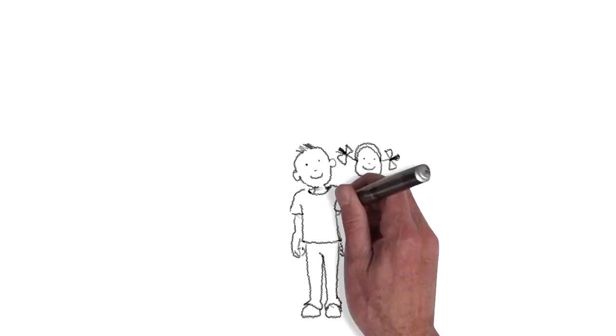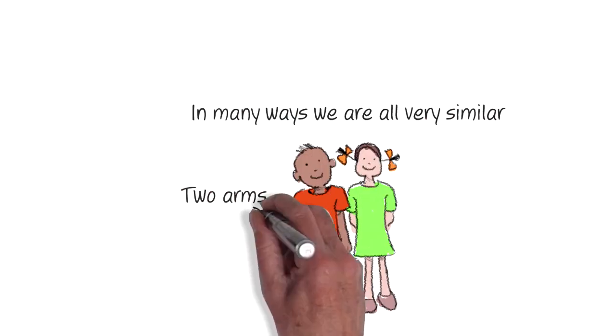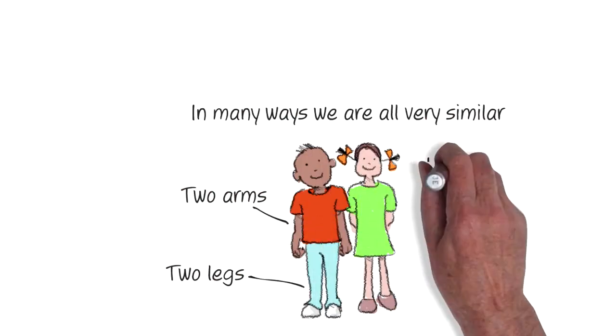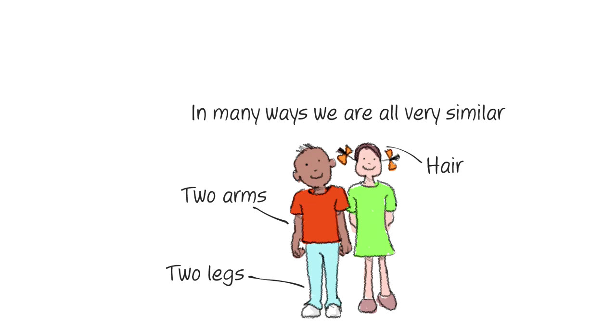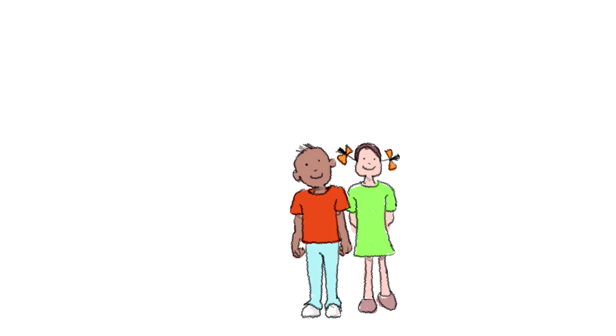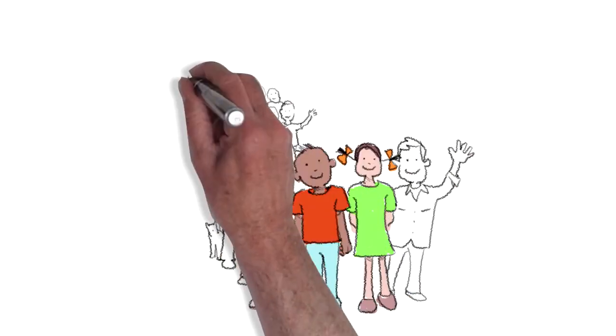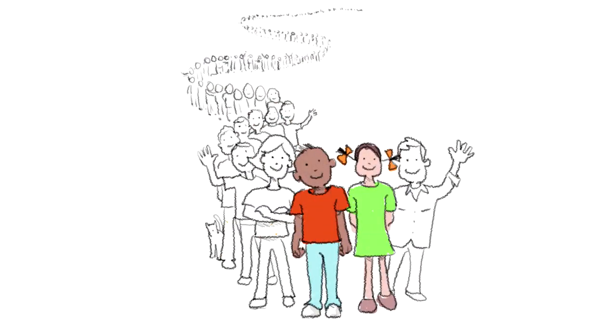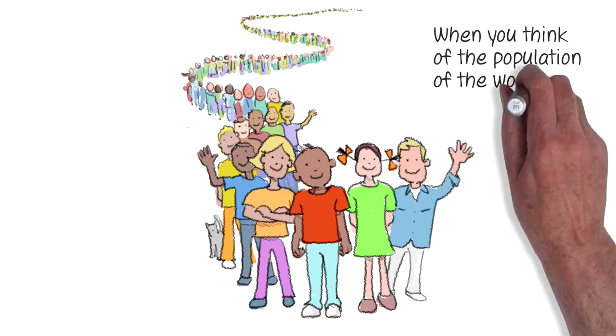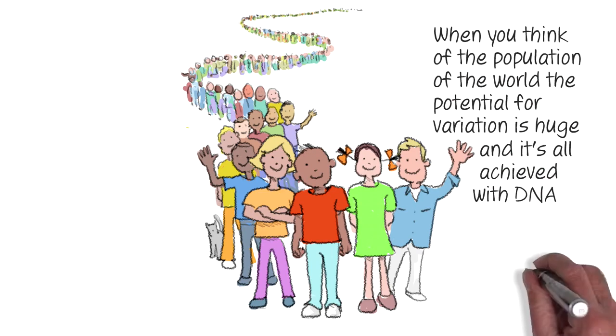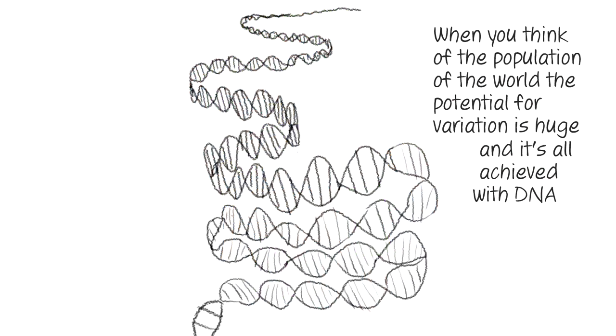In many ways, we're all very similar. Two arms, two legs, hair and so on. And yet, we're all different. Even in the largest crowd, we can recognize our family and friends just by how they look. When you think of the population of the world, the potential for variation is huge. And it's all achieved with DNA.